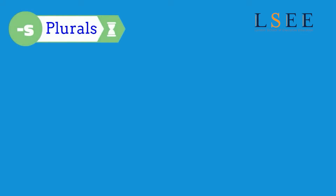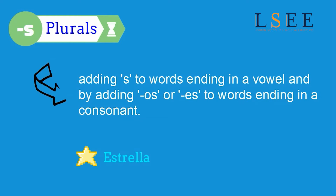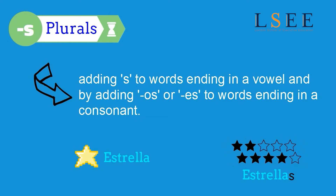Plurals. Generally speaking, the plural is formed by adding -s to words ending in a vowel, and by adding -es or -s to words ending in a consonant.